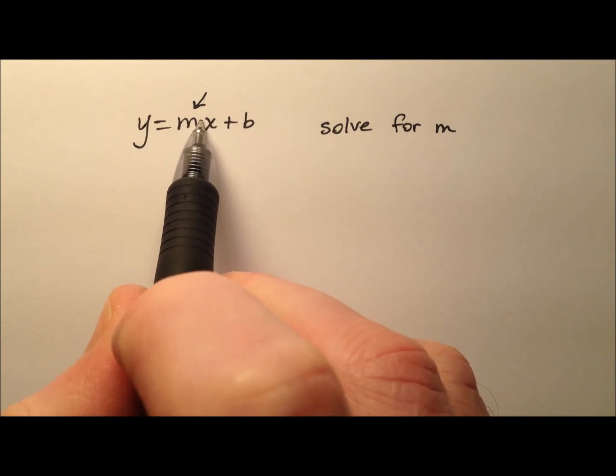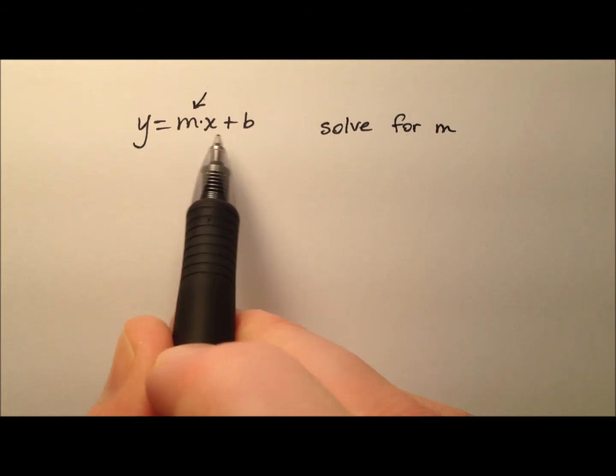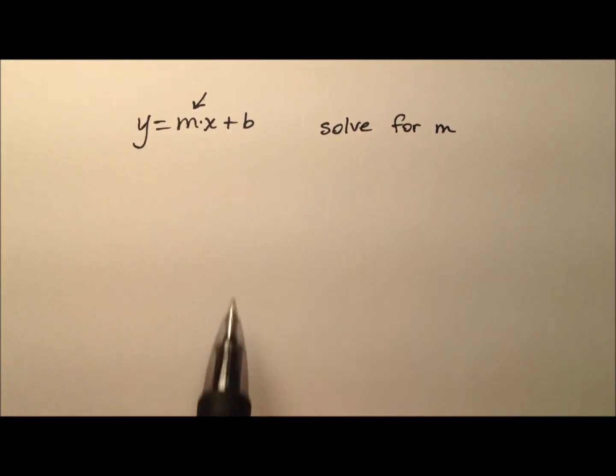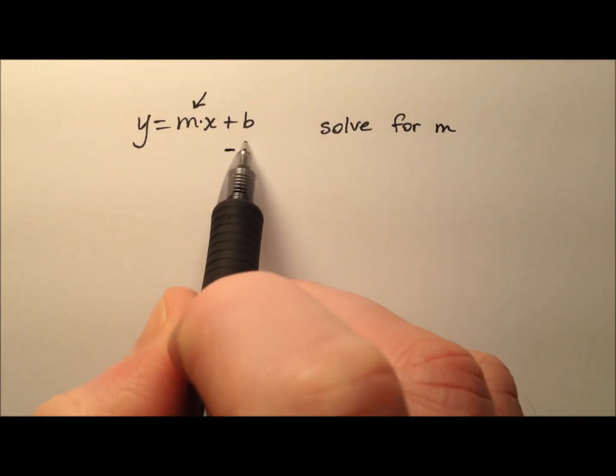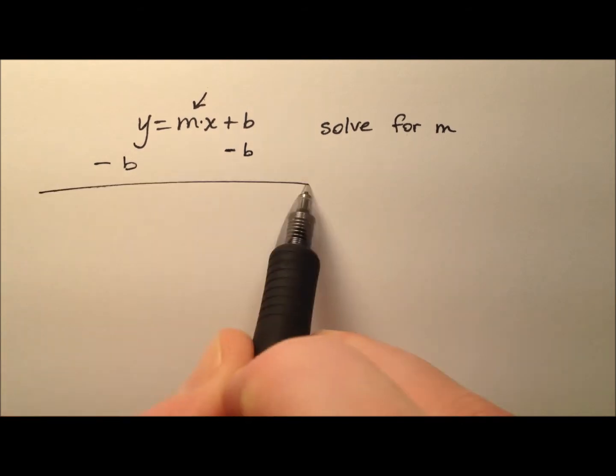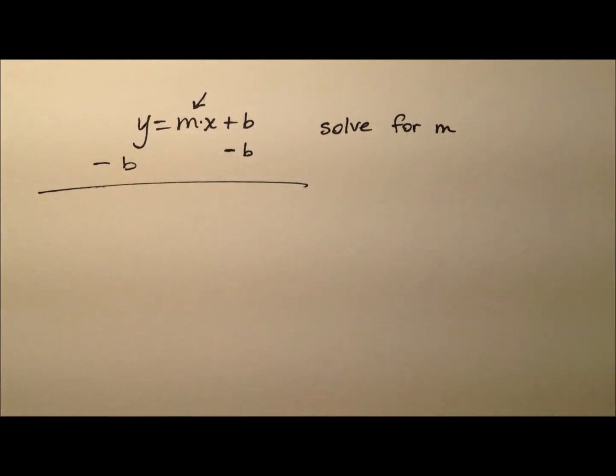Well, the m and the x are being multiplied. And then to that product, we're adding b. So to get this m by itself, the first thing we need to do is get rid of that plus b term on the right side.